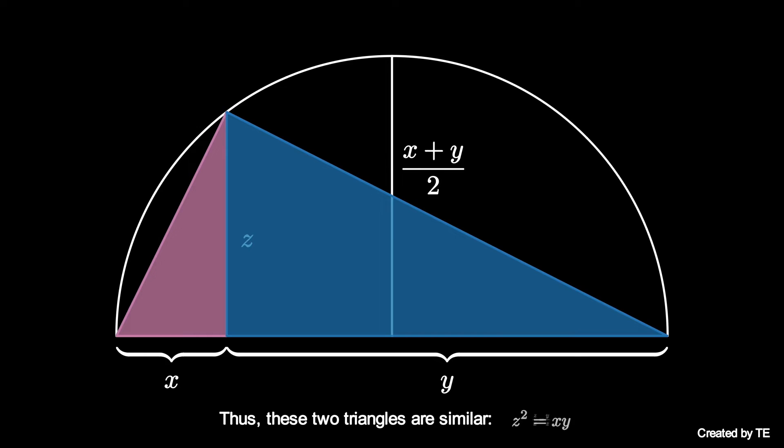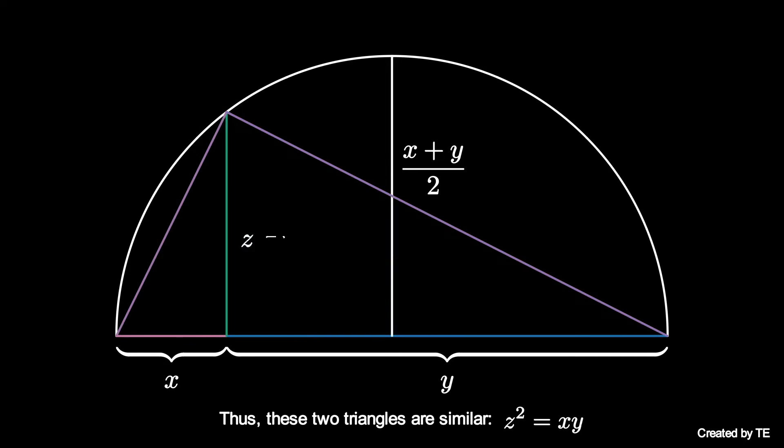We conclude z squared equals x times y, so that z is the square root of x times y.